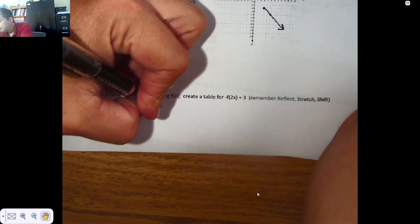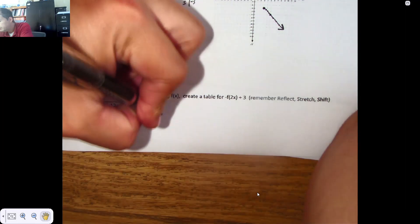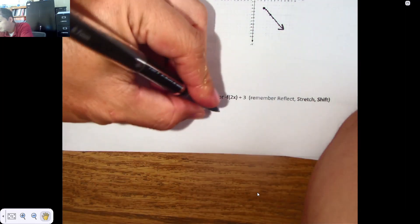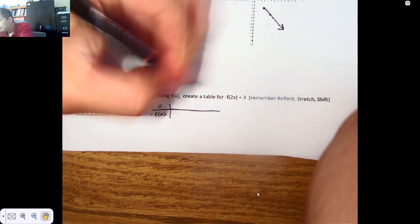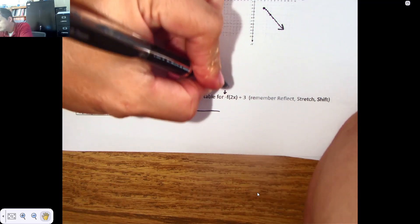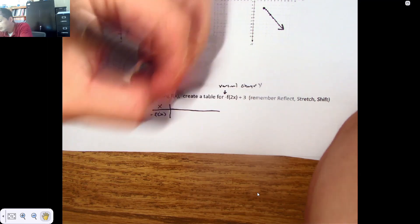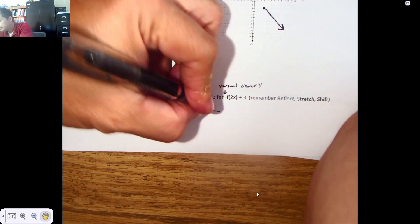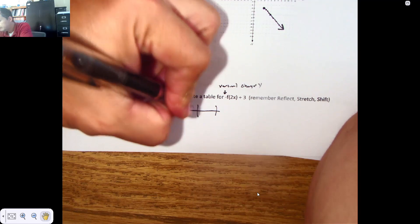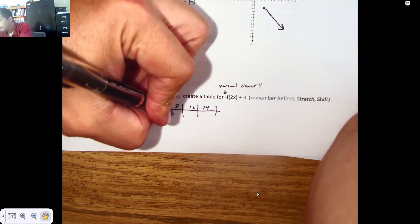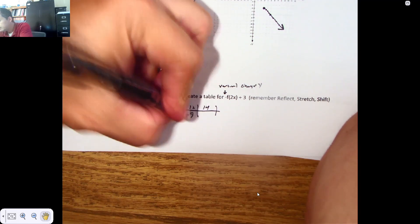And that is a vertical, which means it changes y. And the x values, the input, does not change. There's still 8, 12, and 14. But the y values change their sign.